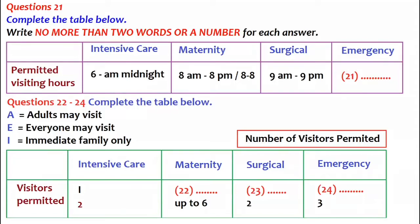Hello. I believe you want to know about visiting hours. Yes, I do, Mrs Lamb. I have to fill this form out, and I'd like to have some idea why the different parts of the hospital have different times for visiting. Well, let's start with an obvious one. Intensive care. People in intensive care are very sick indeed, and for that reason, we say that visitors can come between 6am and midnight. I can understand that.